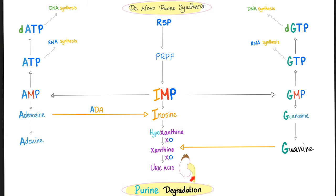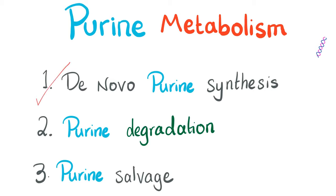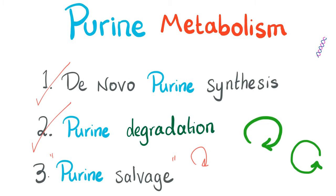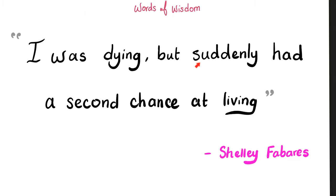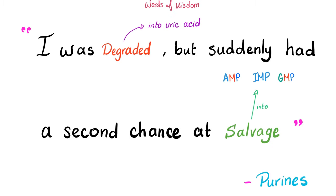Uric acid gets excreted in the urine. We have successfully degraded the purines. We're done with building up purines and destroying purines — now let's redeem them, recycle them, reuse them.